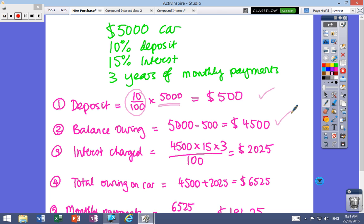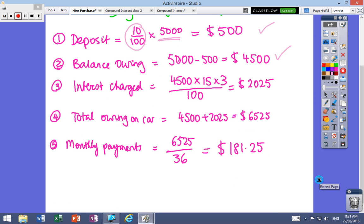Now the interest is charged, not on what you started with, but what you still owe. So this is your PRT calculation, PRT. So that is the interest that you're charged because you didn't pay off the car straight away.